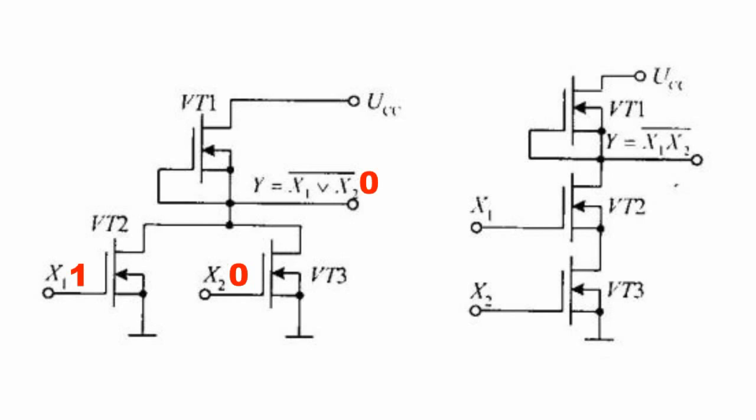The output of an OR NOT device has the value of logical zero if a unit impulse is present on at least one of the inputs.